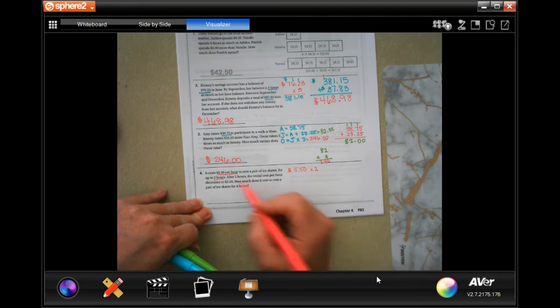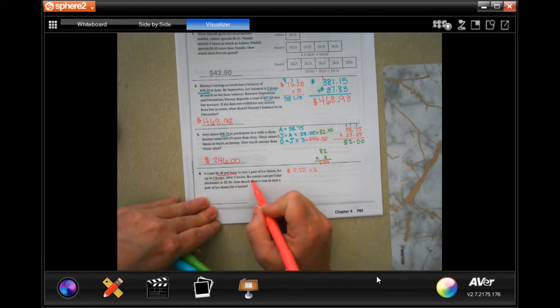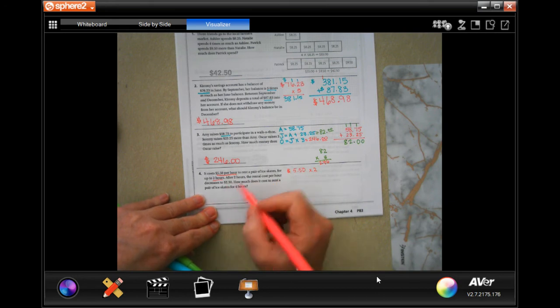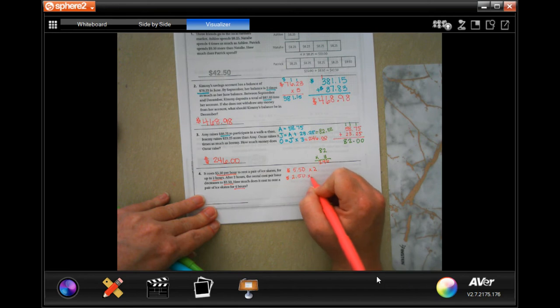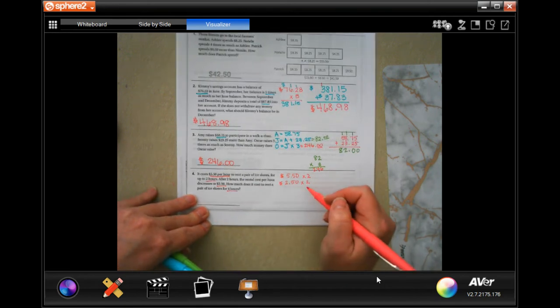It costs $5.50 per hour for two hours. After two hours the rental price per hour decreases to $2.50. So how much would it cost for four hours? Then we have $2.50 times another two hours because that would be four hours. Two hours and two hours is four hours.